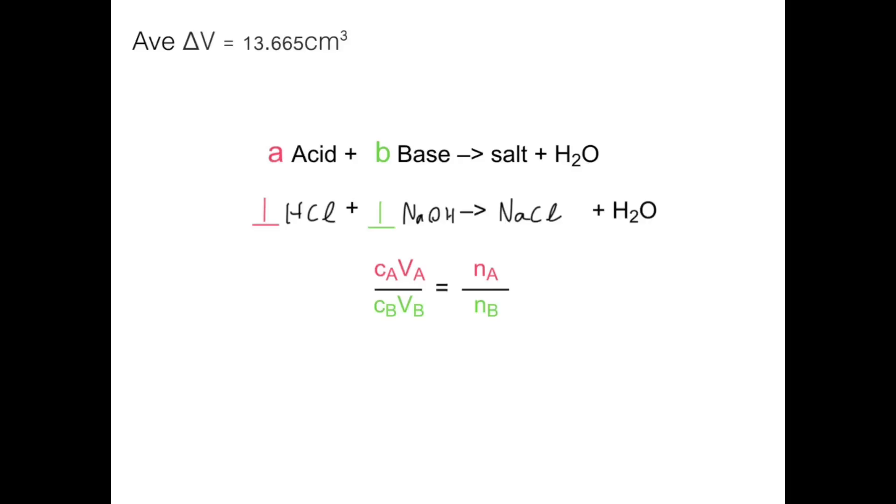So that means we have one mole of HCl reacting with one mole of NaOH to form NaCl and H2O. So now we can use this general formula to calculate the concentration of the acid. So now we can go and substitute our values in. We're looking for the concentration of the acid, Ca. We know that the volume of our acid is 25 because we used a 25 milliliter pipette. This goes over the concentration of our base, which we were told is 0.1, times the volume of our base, which is this value over here.